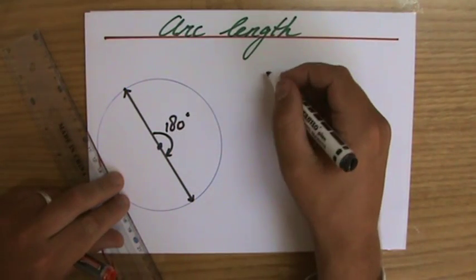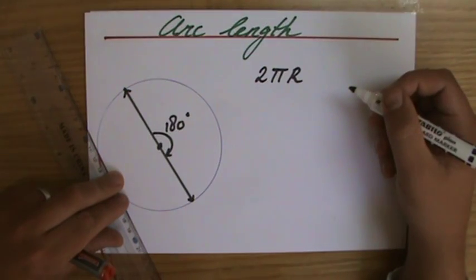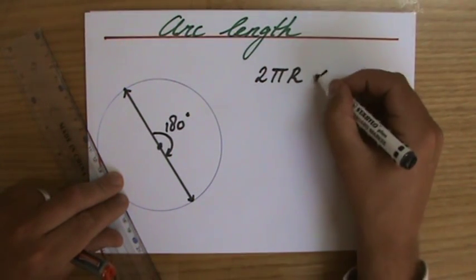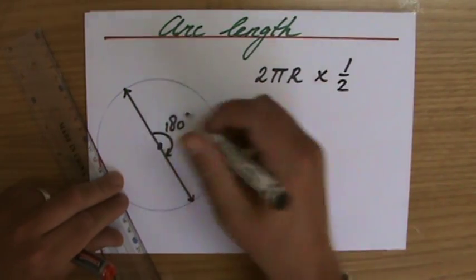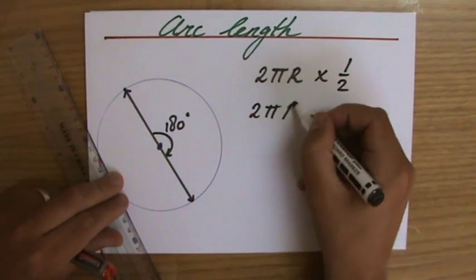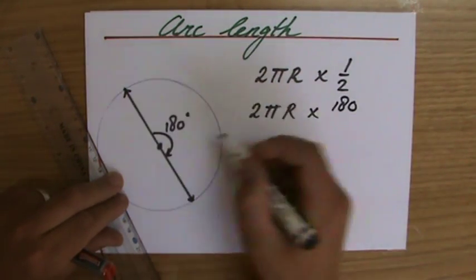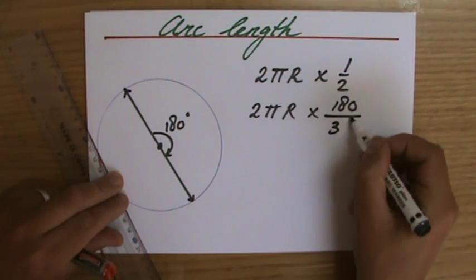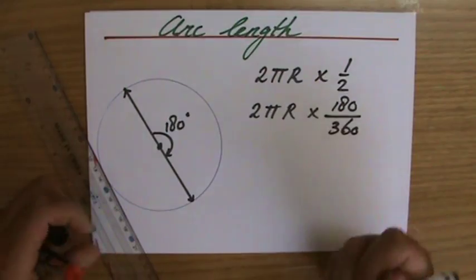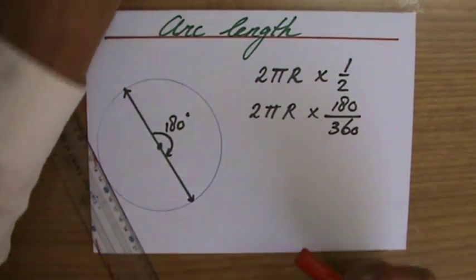So what did you do to find the length of that arc? Actually, you found the total circumference and you divided it by 2, or you timed it by a half, to find the length of this arc. And to just work backwards, a half, that is actually 180 out of 360 degrees in total. That is a half.